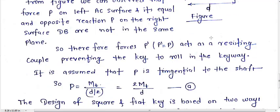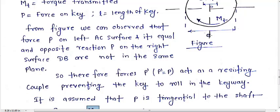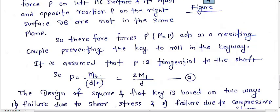It is assumed that P is tangential to the shaft. Here d is the diameter of the shaft. We know torque equals force times perpendicular distance. So P equals Mt divided by d by 2, which gives P equals 2Mt by d.